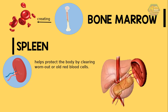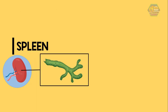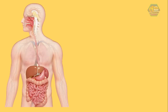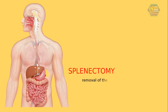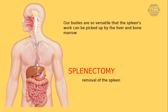The spleen is located in the upper left of the belly, under the ribcage. It is made up of a network of lymphatic vessels that carry lymph throughout the body. Lymph is a clear watery fluid that contains proteins, salts, and other substances. Did you know that you can live without your spleen? In some cases, like injury or disease, a splenectomy — or removal of the spleen — is done.